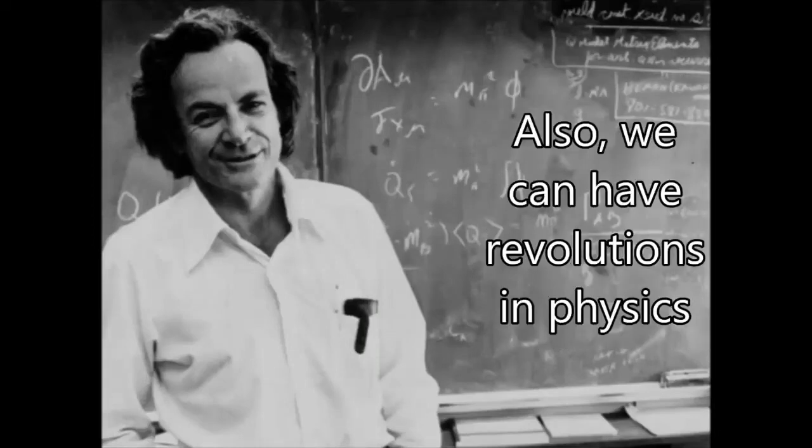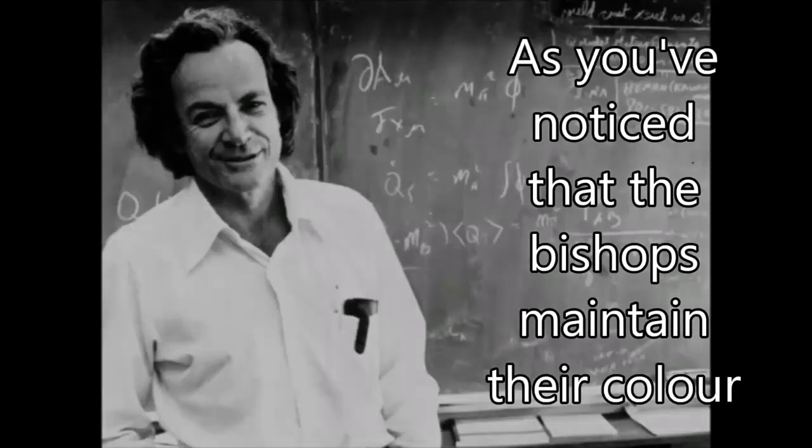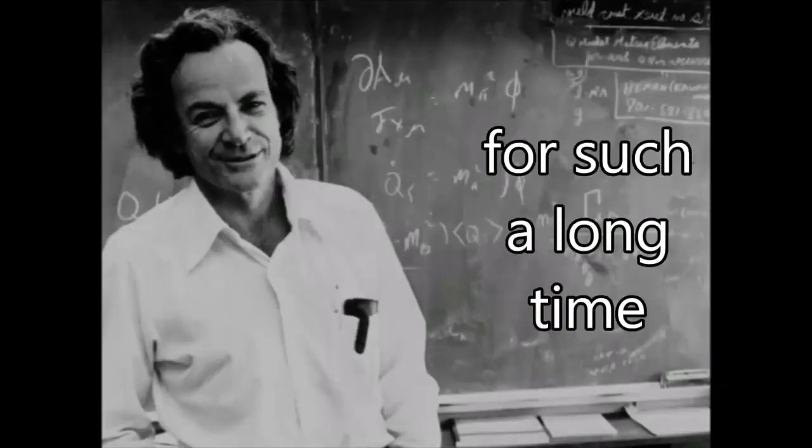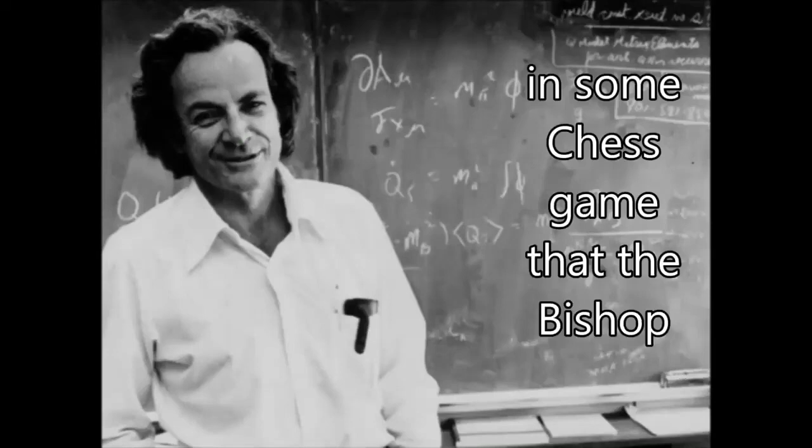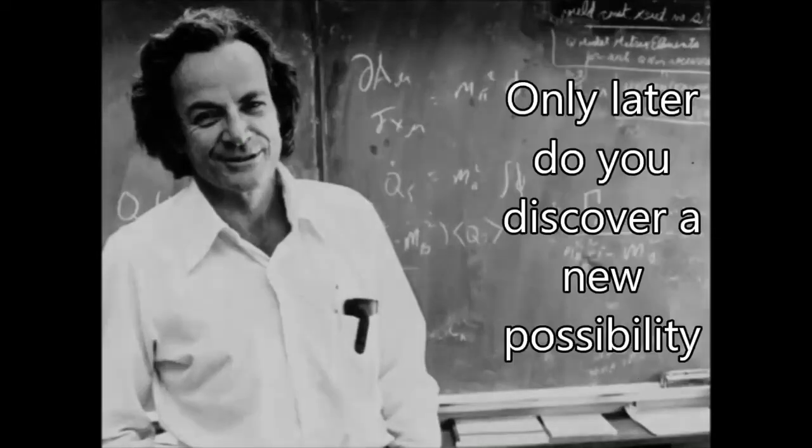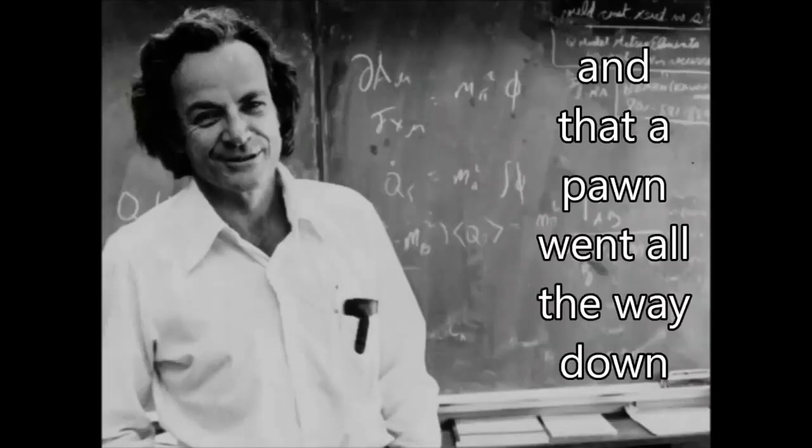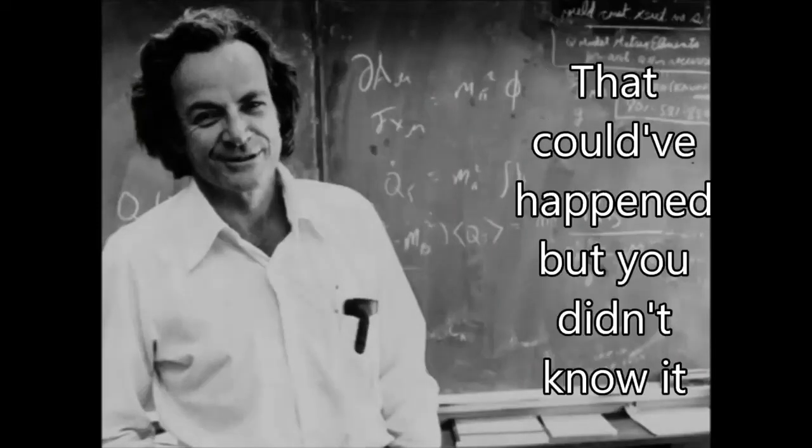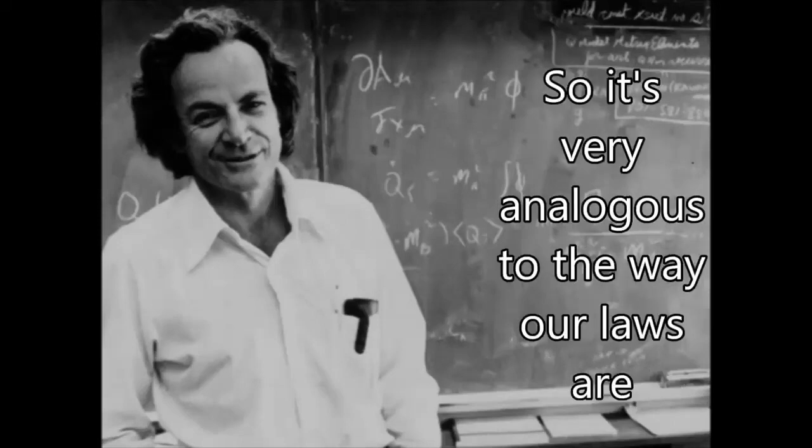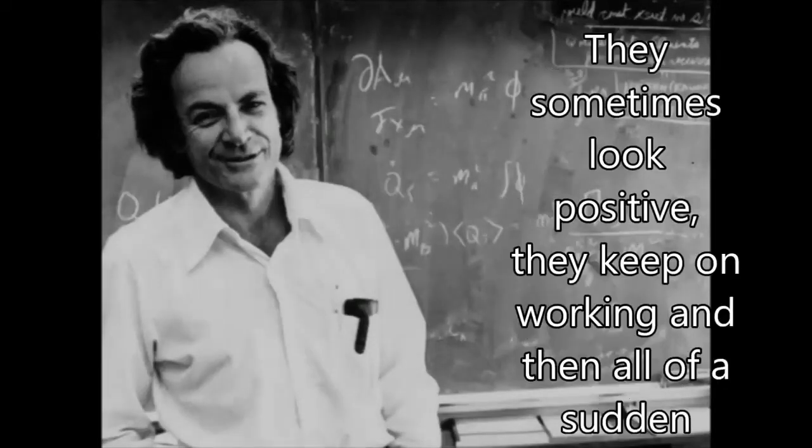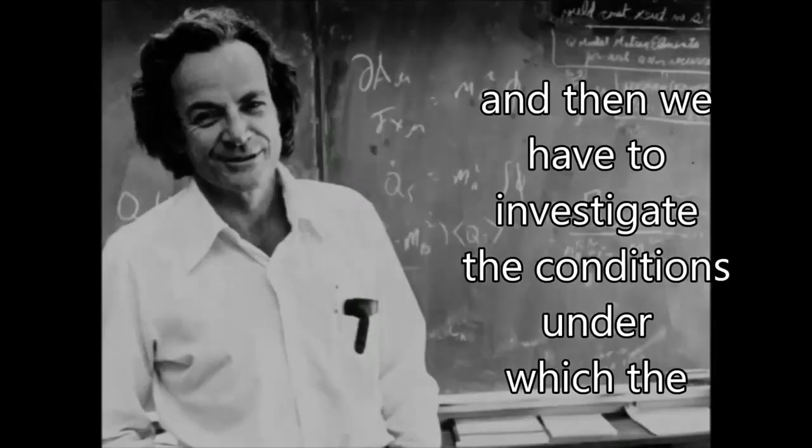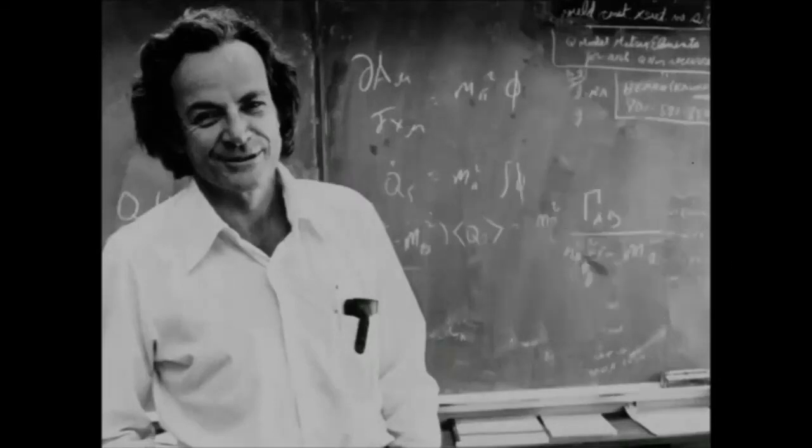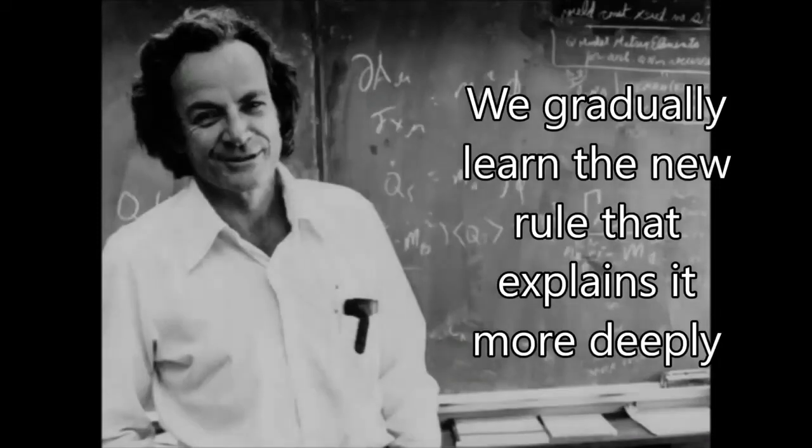Also, we could have revolutions in physics. After you've noticed that the bishops maintain their color and they go along the diagonals and so on for such a long time, and everybody knows that that's true, then you suddenly discover one day in some chess game that the bishop doesn't maintain its color—it changes its color. Only later do you discover the new possibility that the bishop is captured and that a pawn went all the way down to the queenside to produce a new bishop. That can happen, but you didn't know it. And so it's very analogous to the way our laws are. They sometimes look positive, they keep on working, and all of a sudden some little gimmick shows that they're wrong. Then we have to investigate the conditions under which this bishop change of color happened and so forth and gradually learn the new rule that explains it more deeply.